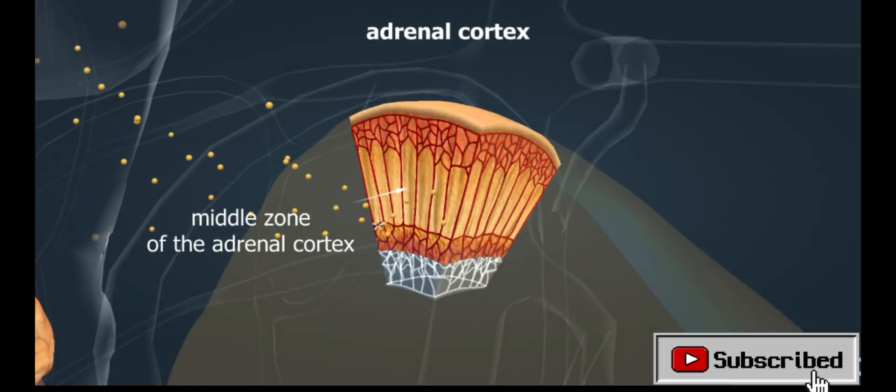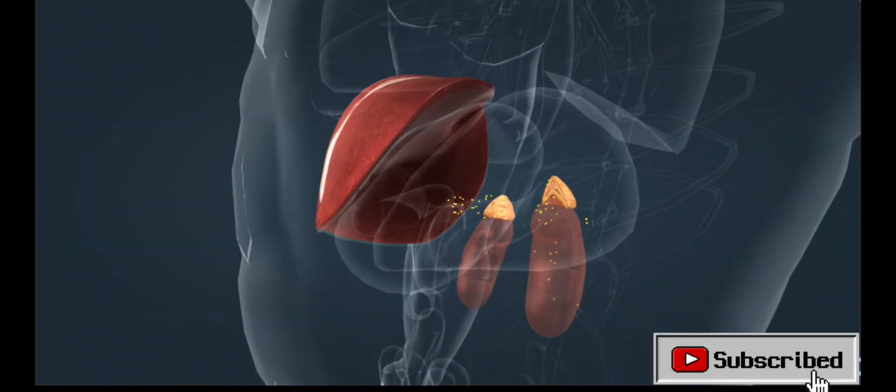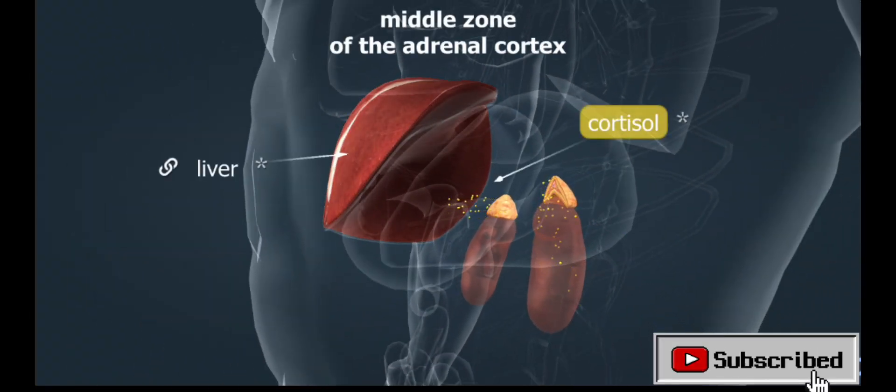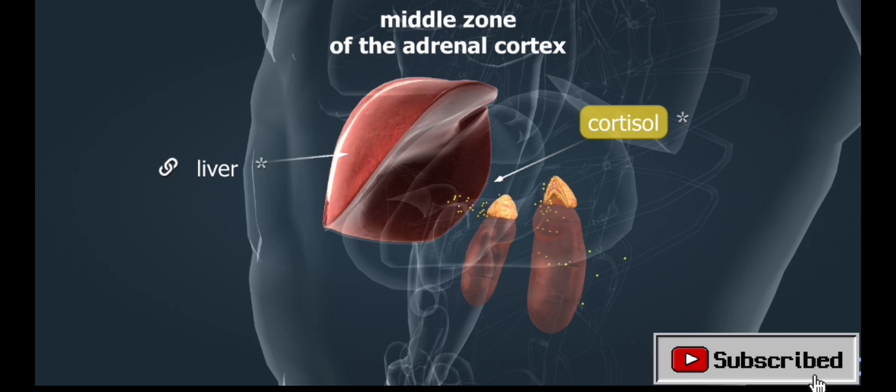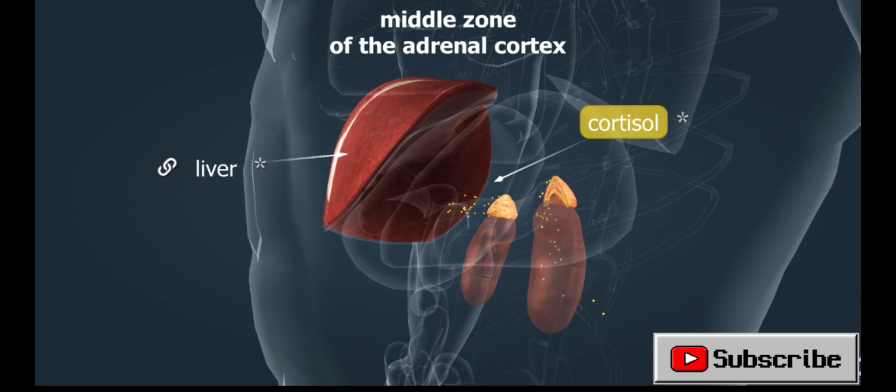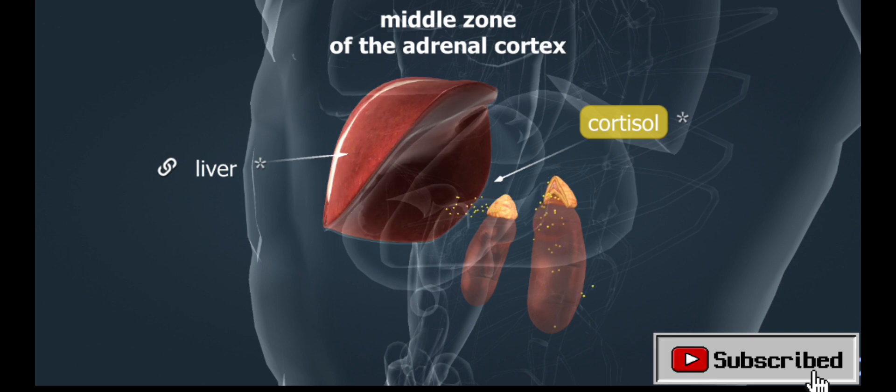The hormones produced in the middle zone affect carbohydrate metabolism in the body. These hormones act on the liver. They promote the storage of glucose and the conversion of lipids and proteins into glucose. This process is called gluconeogenesis and contributes to elevated blood glucose levels.